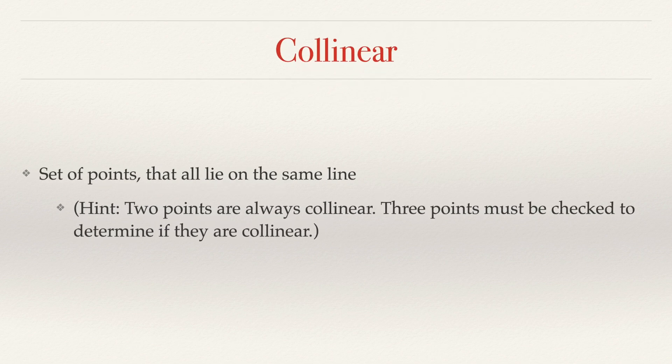Next word: collinear. Co means with. Collinear is every single point that is on a line. Any points that are on the same line are collinear. Any two points have to be collinear, because no matter where those two points are, you could always theoretically form a direct line from one to another. Three points, on the other hand, you actually have to check. Remember, lines have to be straight — they cannot be curved.